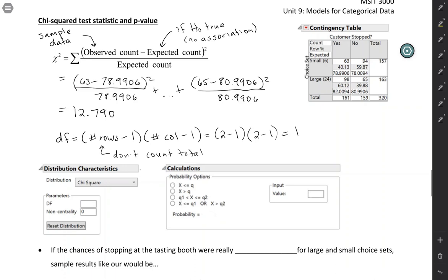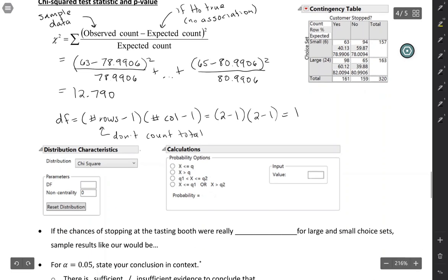We can do it with the distribution calculator, or we can do it with analyze fit y by x. Let's do the distribution calculator first. We're going to be using the chi-squared distribution. We saw before that this one has only one degree of freedom using the formula number of rows minus 1 times number of columns minus 1. We're going to pick greater than, because that's always the choice when we're doing a chi-squared test. Then we put in 12.790, our chi-squared statistic as the value.